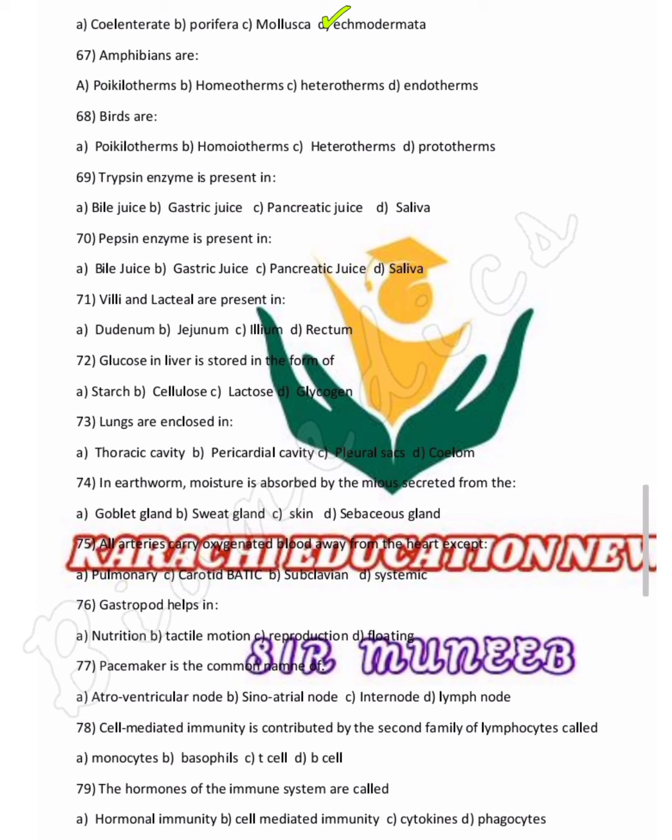Amphibians are poikilotherms, which cannot maintain body temperature at a constant level. Birds and mammals are homeotherms, which maintain body temperature irrespective of the external environment.